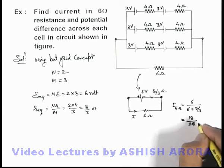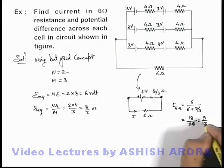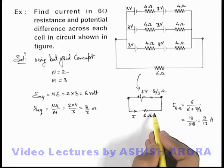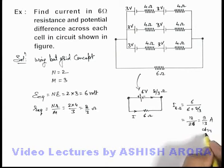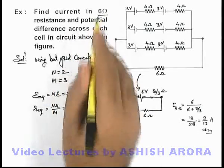So the result will be 9 by 13 ampere, that is current flowing through the 6 ohm resistance. Now in this situation, this is one answer to our problem. We are required to find the current in 6 ohm resistance.